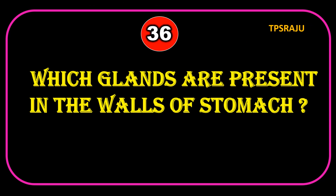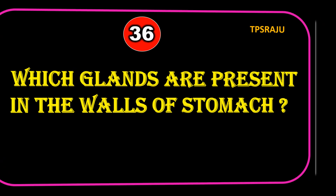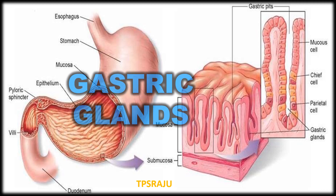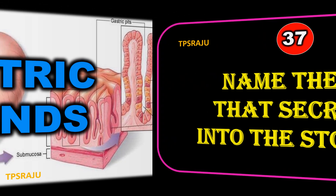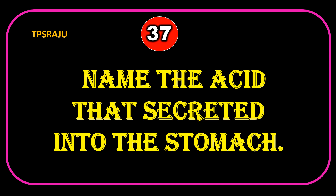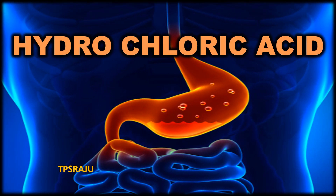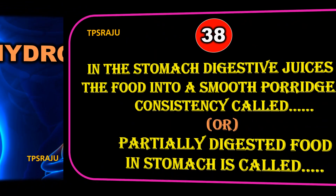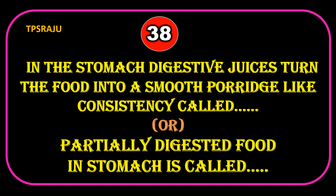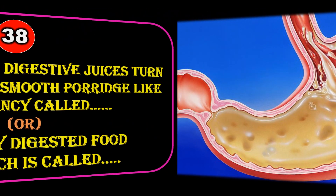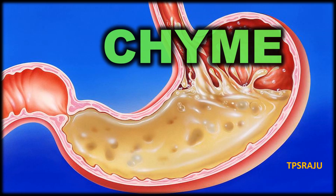Which glands are present in the walls of the stomach? Gastric glands. The acid secreted into the stomach is hydrochloric acid. Digestive juices turn the food into a smooth porridge-like consistency. The partially digested food in the stomach is called chyme.